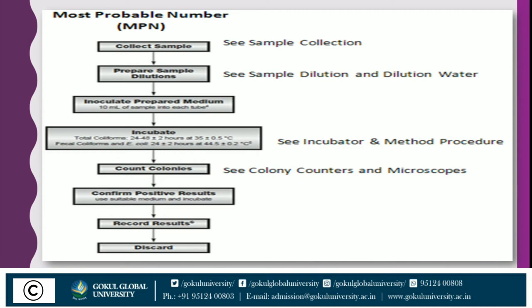The next method is the most probable number method. It is another method used in the analysis of a milk sample. RS Breed scientist gave this type of method. The most probable number method is one type of qualitative method to check water, milk, and food samples, in which we can observe either presence or absence, or the quality of milk.